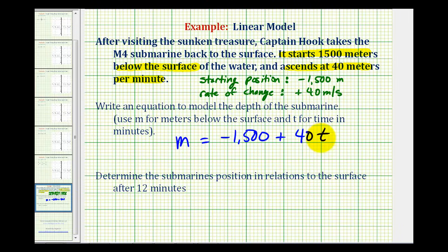Now if we want to write this equation in slope-intercept form, or Y equals MX plus B form, we could rewrite this as M equals 40T minus 1,500. These two equations are equivalent, but this form does match the form of a linear equation that we have been studying.